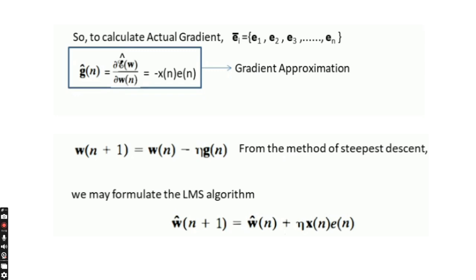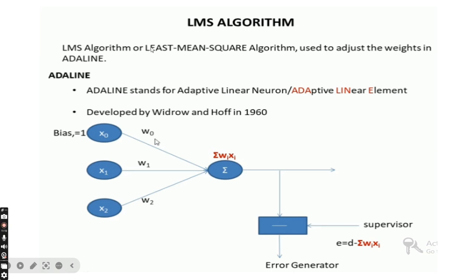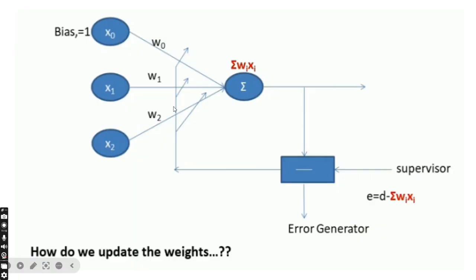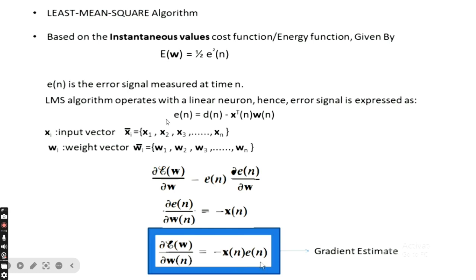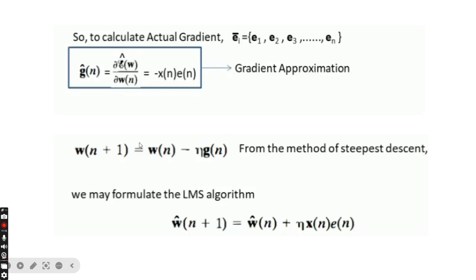In the LMS algorithm, we apply the filtering and adaptive process as studied in the last class. To summarize: we covered what LMS algorithm is, what Adaline is, how the dynamic system behaves, how to calculate the error signal, how to adjust the weights, the energy function, how to define the error signal, the input vector, the weight vector, how to estimate the gradient descent, and finally how to adjust the weight in the LMS algorithm. I hope you clearly understand what an LMS algorithm is. Thank you. Next class, we will see the next topic.